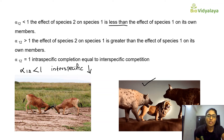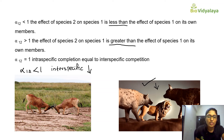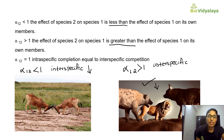Interspecific competition is less than intraspecific competition when α12 < 1. If α12 is greater than 1, then the effect of species 2 on species 1 is greater than the effect of species 1 on its own members — meaning interspecific competition is more compared to intraspecific competition.